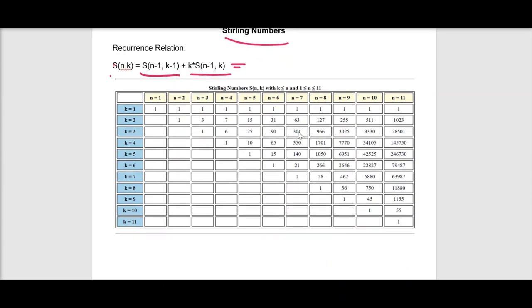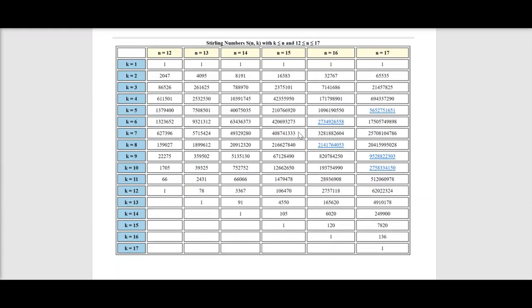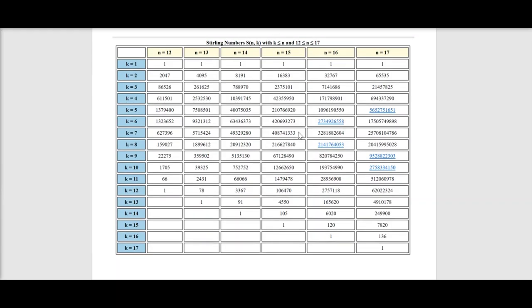Based on this equation, the Stirling numbers are formed as a table like this to show you an idea. Here the value of n is from 1 to 11 and the value of k is from 1 to 11 in this table, and it continues here in 12, 13, 14, 15 and 16, 17 here. The value of n also changes here.